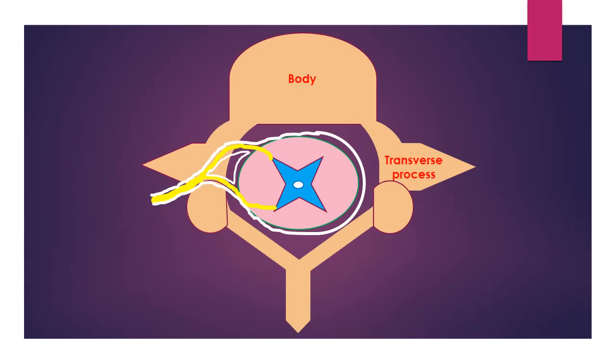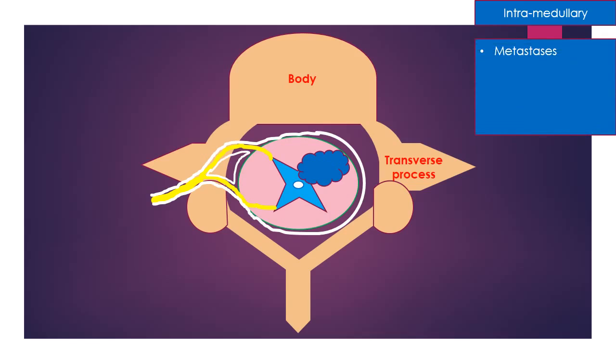Space-occupying lesions within the spinal canal can be divided into two groups. First are intramedullary lesions arising within the substance of spinal cord which invade and destroy tracts and central grey structures. Examples are metastasis, astrocytoma, syringomyelia, ependymoma, hemangioblastoma, and rarely AV malformations.